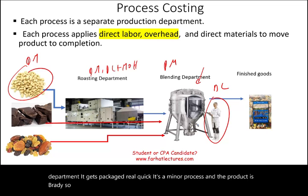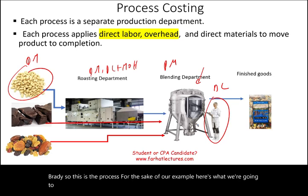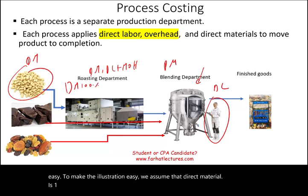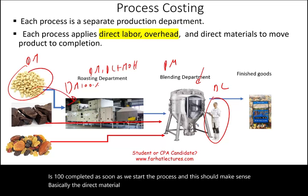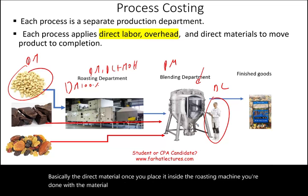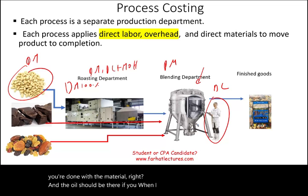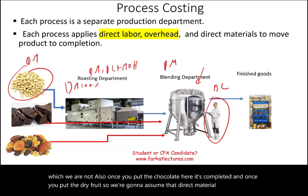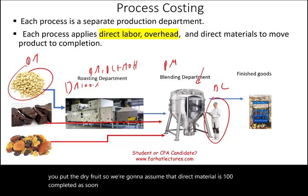To make the math easy, we assume that direct material is 100% completed as soon as we start the process. This makes sense: once you place peanuts into the roasting machine, you're done with the material. Similarly, once you add chocolate and dried fruit in blending, those materials are complete. So direct material is 100% done at the start of each process.